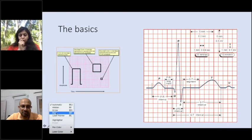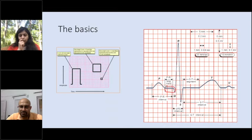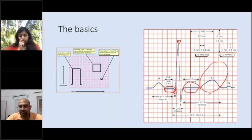The PR segment is from the end of P wave till the beginning of Q wave, the first negative deflection on ECG. We have R wave and QRS complex, which signifies ventricular depolarization. From the end of S wave till the beginning of T wave is the ST segment, followed by T wave. T wave signifies ventricular repolarization.